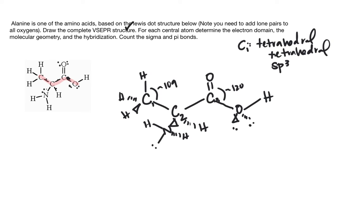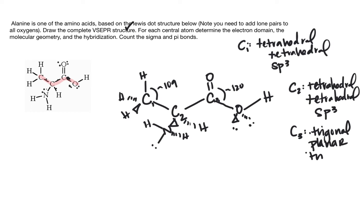So we have a VSEPR structure for each central atom. So we have, we'll say three or four central atoms. So C2. C2 is also tetrahedral, tetrahedral, and SP3. So let's look at C3. There are three things connected, which means it's a steric number of three. That is trigonal planar. Trigonal planar. And that's SP2.